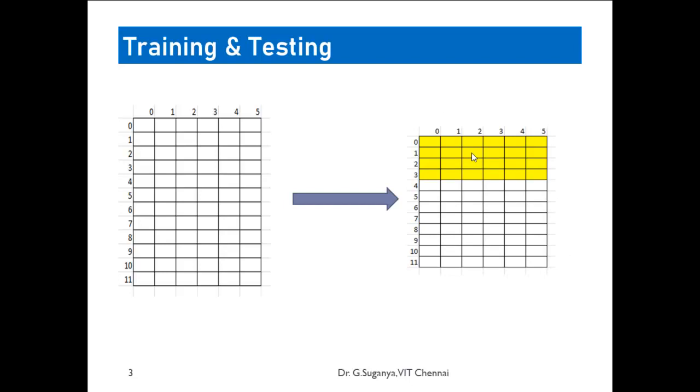Having done that, the next step is to go for validation. Now this fold which we have marked in yellow color will be separated as testing dataset and the rest will be used for training.